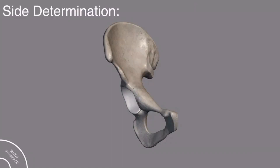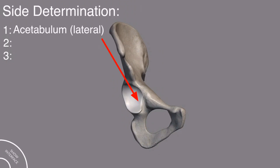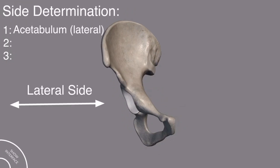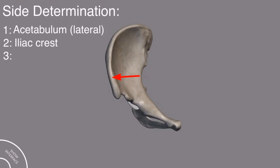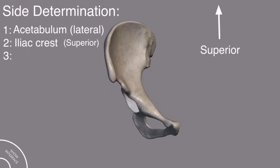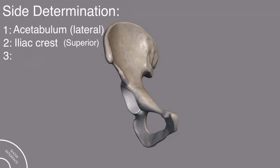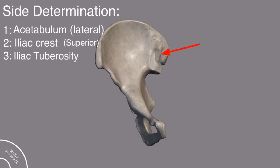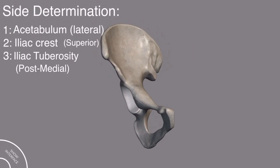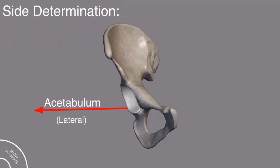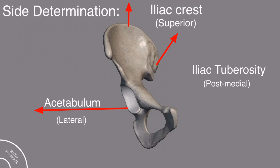Now let's come to the side determination of the hip bone. For side determination, you should note three important points. First, the acetabulum should be on the lateral side. Second, the iliac crest should be on the superior surface. Third, the iliac tuberosity should be on the posterior and medial side. So, making the acetabulum lateral, the iliac crest superior, and the iliac tuberosity on the posterior medial side — this is the right hip bone.